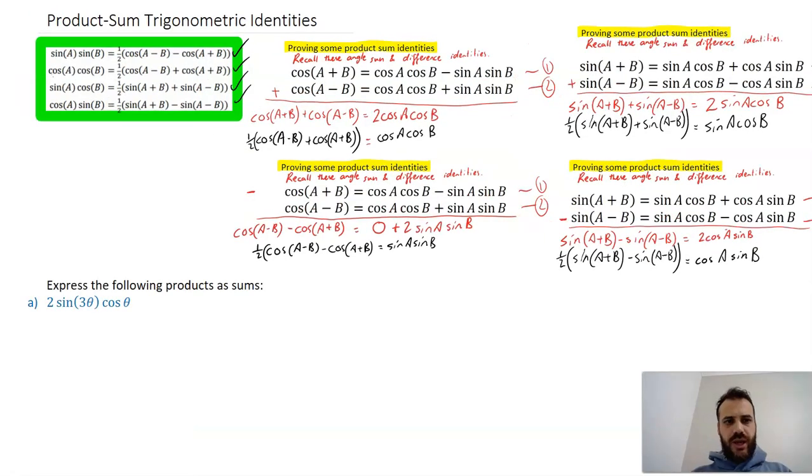And obviously we can use them for some stuff now. Get asked to express a product as a sum. So you might say two sin(3θ) cos(θ). Now let's go through our trig identities. Sine times a cos. That's the one we want to use. Sine times a cos. Now there's this two out the front here, but we'll deal with that in a second. I suppose by a second I mean right now.